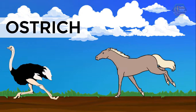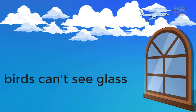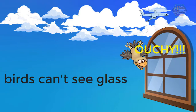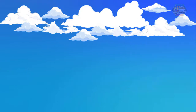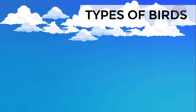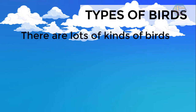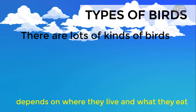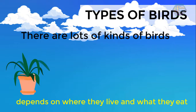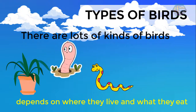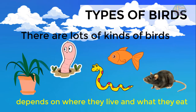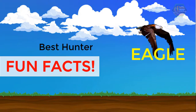Did you know that most birds cannot see glass? They just bump into glass thinking it's clear air. What are the types of birds? There are lots of kinds of birds, and each kind depends on where they live and what they eat. Some birds feed on plants, some eat insects, and still others eat other animals like fish, snakes, or rodents.